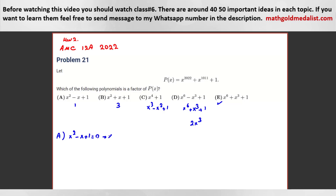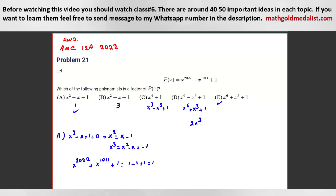x squared is x minus 1. So x cubed is x squared minus x, which is x minus 1, minus 1. Or you can multiply by x plus 1. So x cubed is negative 1, and you can say x to the 20 plus x to the 10 plus 1. This one is 1 minus 1 plus 1, which is 1. Correct, good job.